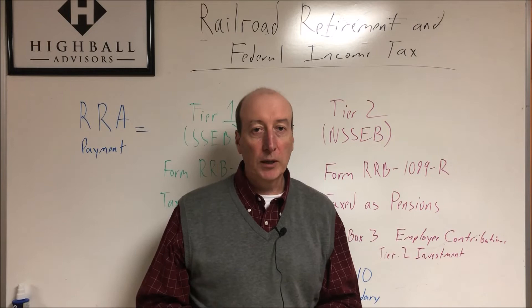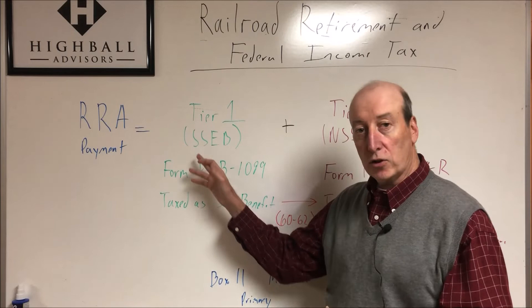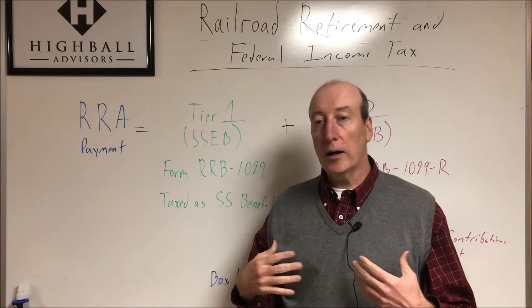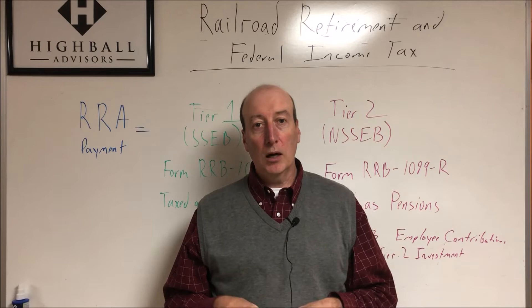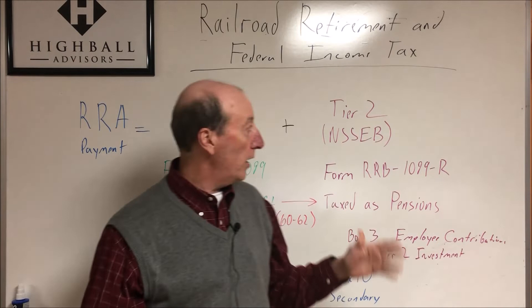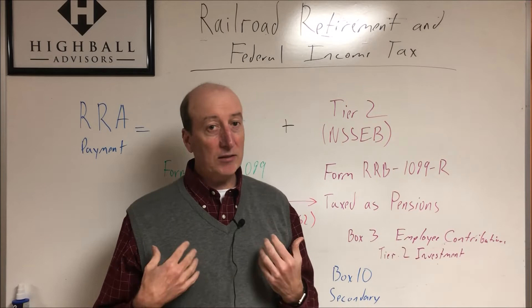Your Tier 1 gets taxed as a Social Security equivalent benefit. To understand that taxation formula, you can check out my previous video on taxes on your Railroad Retirement annuity — it's on YouTube and walks you through the rates and how it's all calculated. Your Tier 2, on the other hand, gets taxed as a pension — basically as income — so that's a different taxation rate.